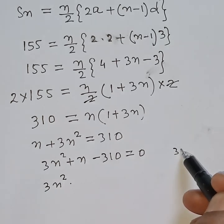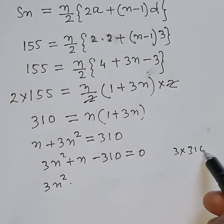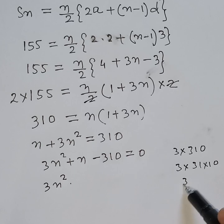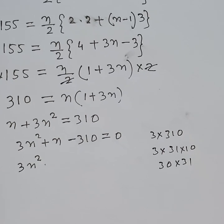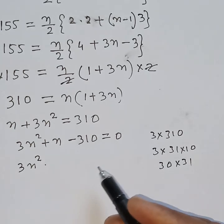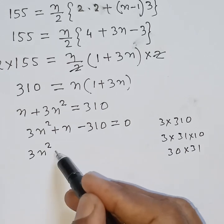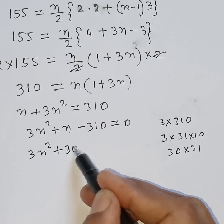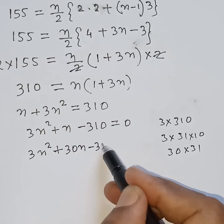Factorizing: 3 into 10 equals 30, and 3 into 31 equals 93. We split the middle term as plus 30n minus 31n, so 3n squared plus 31n minus 30n minus 310 is equal to 0.